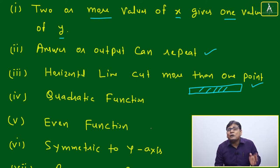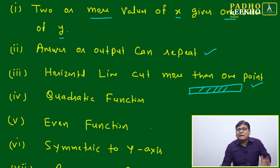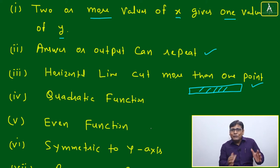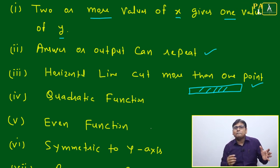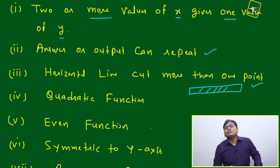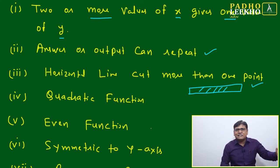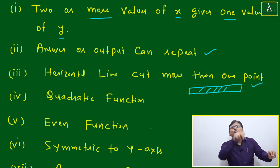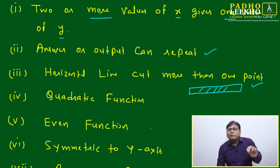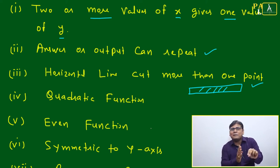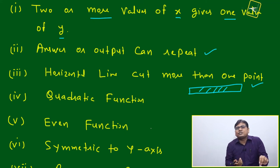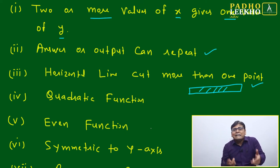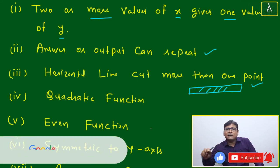The vertical line test is used to check whether a relation is a function or not. But once a function is defined — once we know this relation is a function — then to categorize what type of function it is (one-to-one, many-to-one, onto, into, bijective), we use the horizontal line test. Very clear: vertical line test checks 'is it a function?'; horizontal line test checks 'what type of function?'